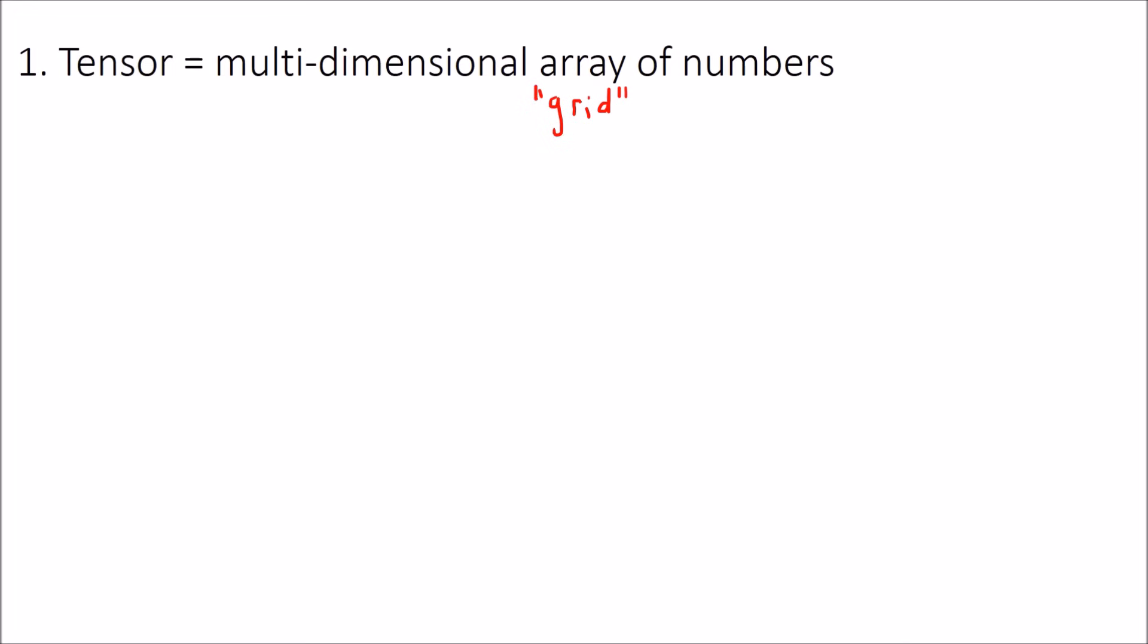The simplest example of a tensor is what we would call a scalar, or sometimes a rank zero tensor. A scalar is basically just a number. So any number like 1, 2, 5, 3 quarters...